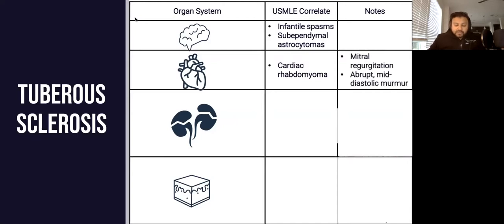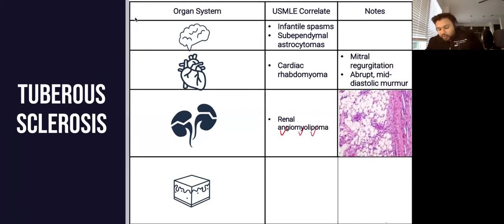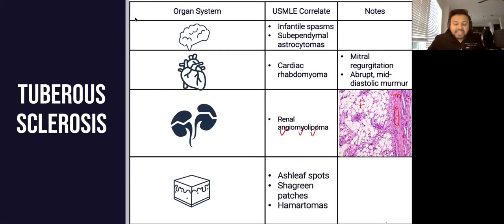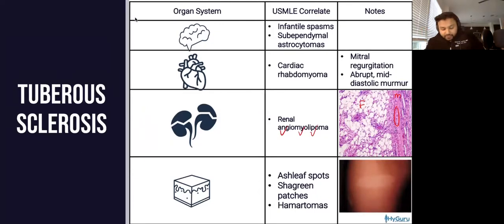Also, these patients are going to have kidney tumors known as renal angiomyolipomas. They're going to be filled with blood vessels, muscle, and fat cells — angiomyolipomas. And then finally, the skin abnormalities are going to be these hypopigmented spots — that's different than café au lait spots. Those are known as ash leaf spots.